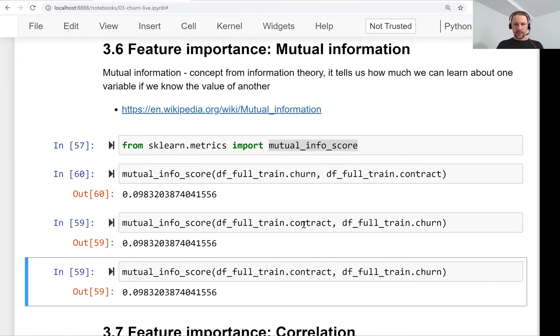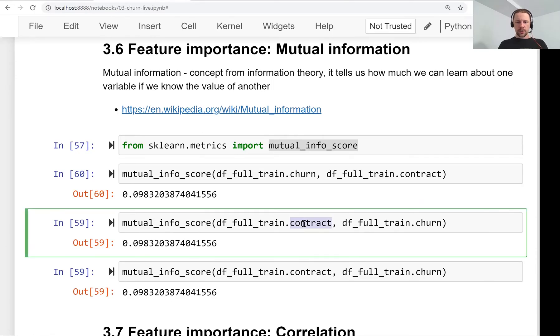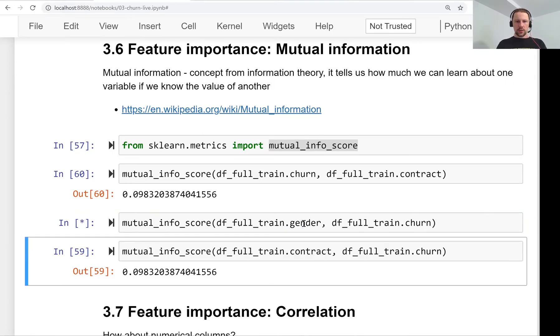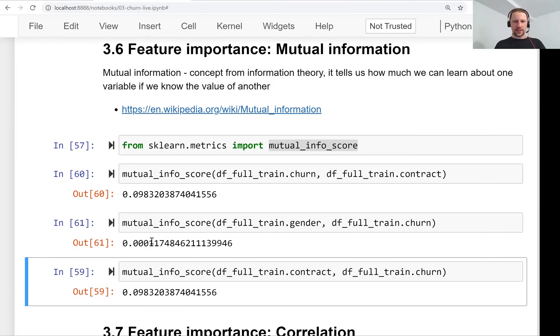We can see if we now compare it with gender, we see that gender is super not informative. If somebody tells us this customer is female, we learn nothing about whether they are going to churn or not. But if somebody tells us that this person has a month-to-month contract, we learn quite a lot—we know that this person is actually at high risk of churning.